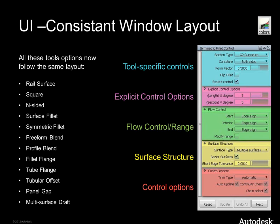One example is the window layout. You see on the left all the tools that are affected — all the surface creation tools. On the right side it's color coded showing the structure of the windows. The example here is symmetric fillet, but it's the same for all tools. On top you find the tool-specific controls, then the explicit control options, flow control for dealing edges, surface structure to control Bezier or NURBS, and continuity check options. It's all the same logical structure now.